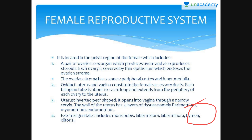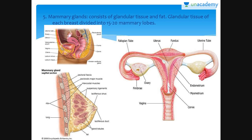Then there is hymen, which is the opening of the vagina often covered partially by a membrane called hymen. The last one is clitoris — a finger-like structure that lies at the upper junction of the two labia minora above the urethral opening.